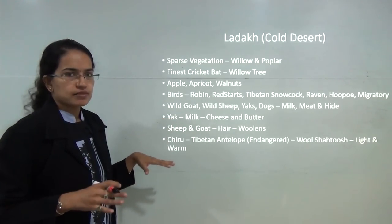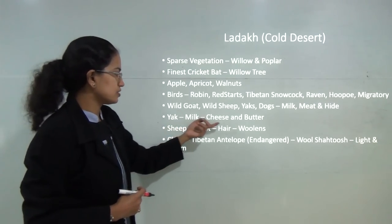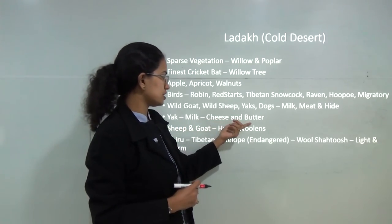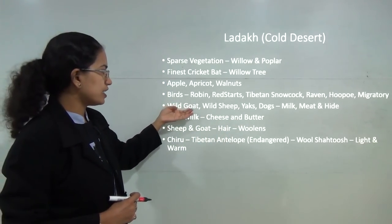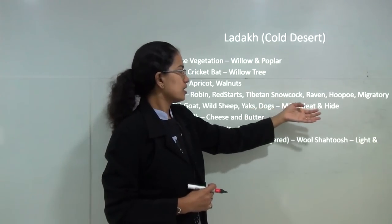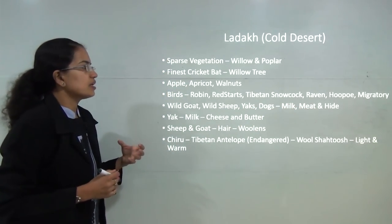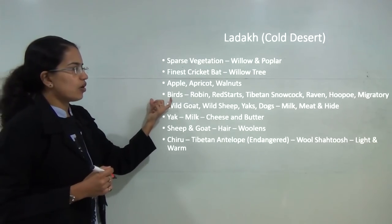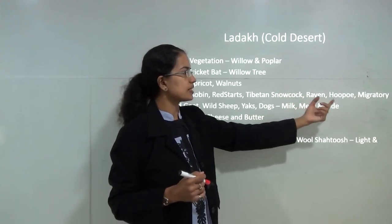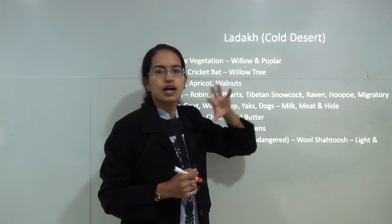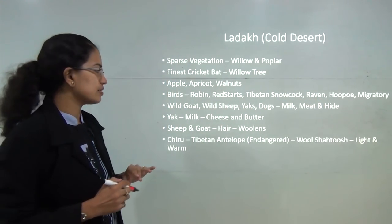The yak is one of the animals commonly found in Ladakh, and its milk is used to produce tea and butter. Other wildlife includes wild goats, wild sheep and dogs, which are used for their meat and hide. Some of the common birds here are robins, redstarts, Tibetan snowcocks, ravens and hoopoes. This region is also home to numerous migratory birds.